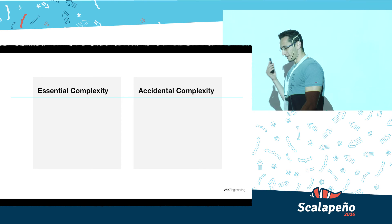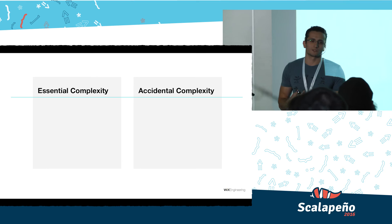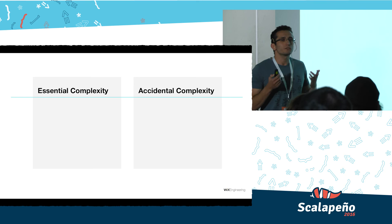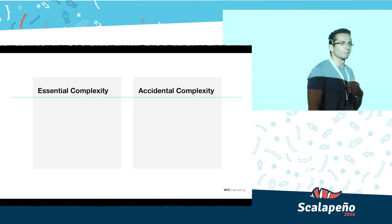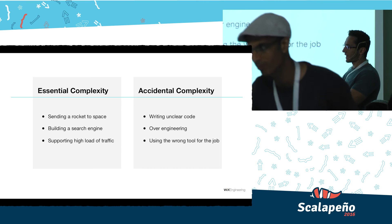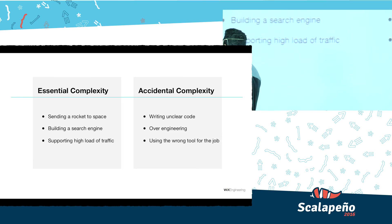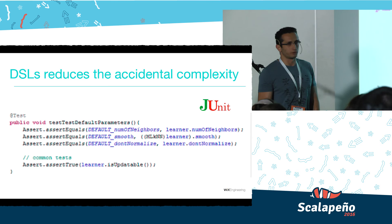We have two kinds of complexity: essential and accidental. Essential complexity is basically the heart of the problem we're trying to solve — like sending a rocket into space. Whatever you do, it's still a hard problem; you cannot avoid it. On the other hand, accidental complexity is up to us, because we decide how we choose to implement the solution — we can control it. I claim that DSLs can help us reduce the accidental complexity of our code.